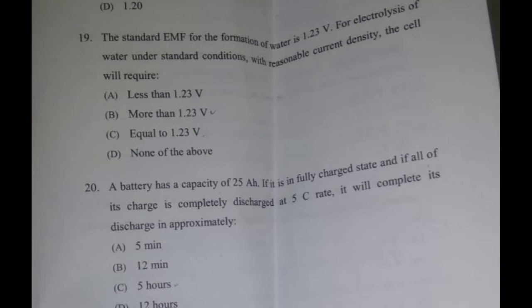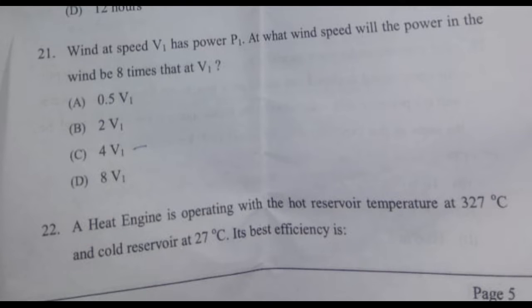Question 19: the standard EMF for the formation of water is 1.23 V. For electrolysis of water under standard conditions with reasonable current density, the cell will require. Question 20: a battery has a capacity of 25 Ah; if fully charged and all of its charge is completely discharged at a 5C rate, it will complete its discharge in approximately. Question 21: wind at speed v1 has power p1 — at what wind speed will the power in the wind be eight times that at v1?